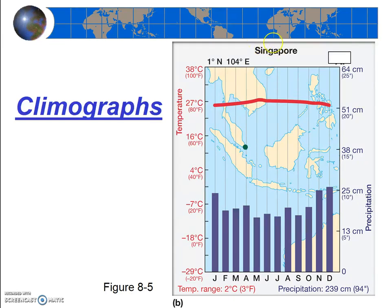Now consider this climograph for Singapore. Based only on the temperature profile, where would you predict that this station is — the tropics, the mid-latitudes, or the polar regions? Notice that it is always quite warm, and the temperature is so consistent it's hard to tell if it's in the northern or southern hemisphere. The temperature is consistently high year-round with basically no seasonality at all. This implies it's near the equator, where you get pretty intense sunlight all year round and there's not much in the way of seasons.